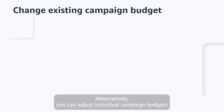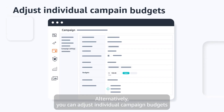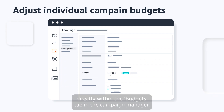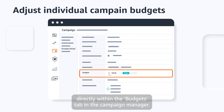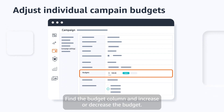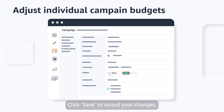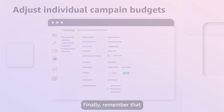Alternatively, you can adjust individual campaign budgets directly within the Budgets tab in the Campaign Manager. Find the Budget column and increase or decrease the budget, then click Save to record your changes.